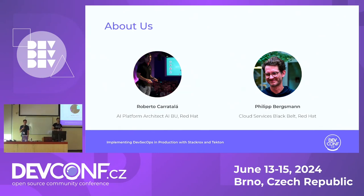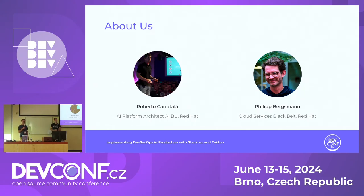My name is Roberto Radla and I'm an AI Platform Architect in the AI Business Unit working at Red Hat. And with me is Philip, who is also working at Red Hat in the OpenShift Black Belt team, basically doing POCs with customers and partners with our managed OpenShift services.